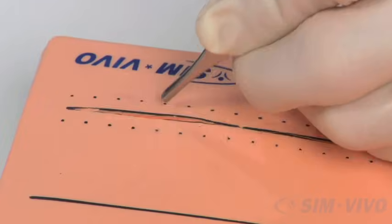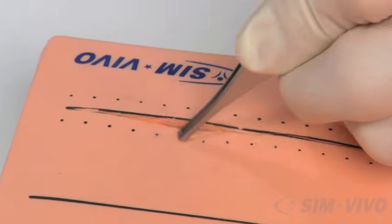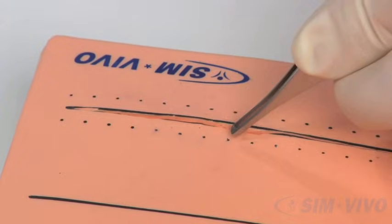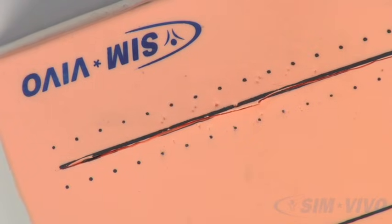Rather than putting individual sutures between the dots, we're going to place a single suture that will connect the dots with one line. To accomplish this, first start by placing a simple suture at one end of the closure.